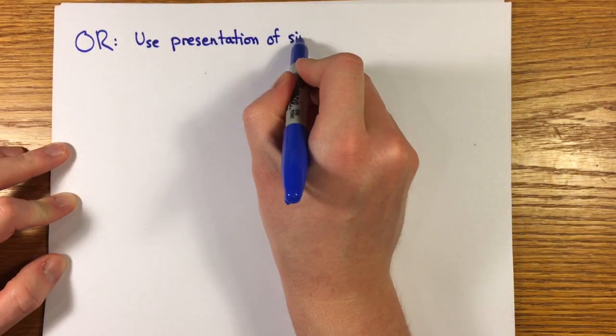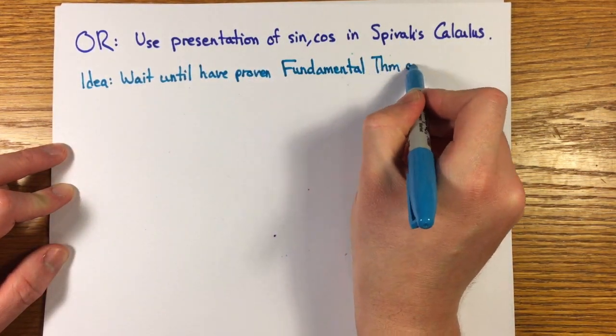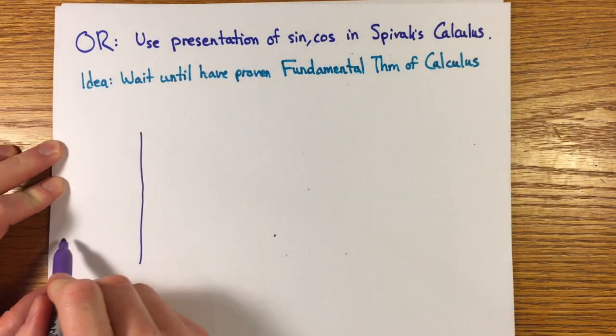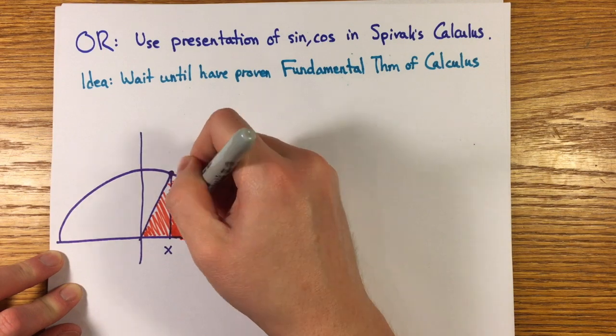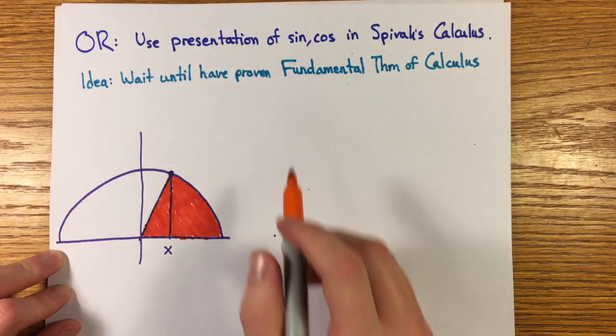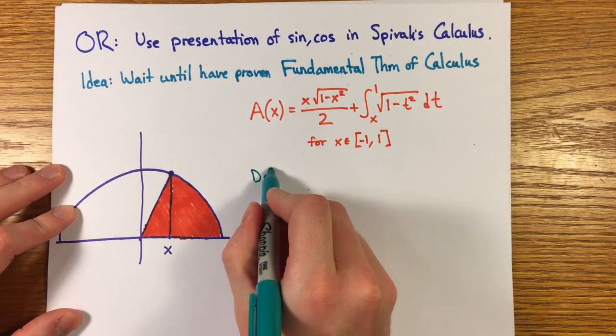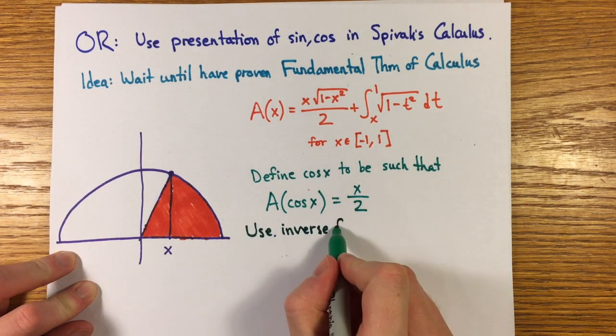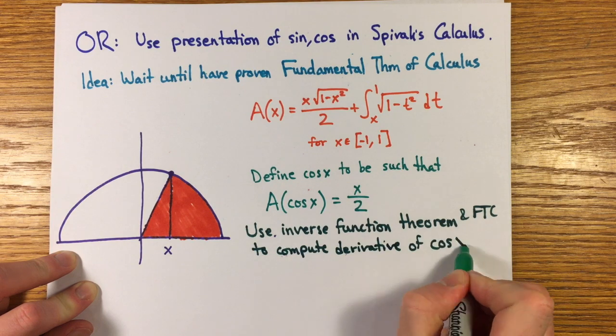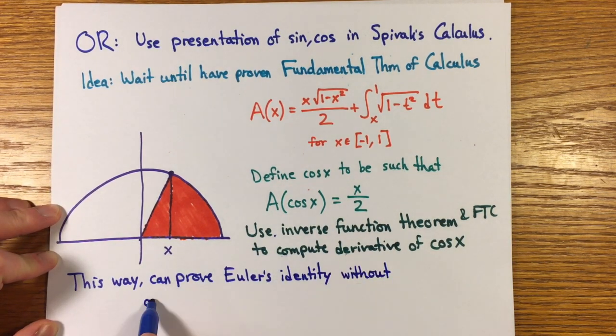As I described in the first episode of this series, Spivak's calculus text gives a different, unconventional presentation of the trig functions. Their definitions as inverse to areas of sectors is a standard variation on defining in terms of arc length, but because he waits until he's already proved the fundamental theorem of calculus and the inverse function theorem, he's able to take derivatives of sine and cosine without the angle sum identities. So technically, I suppose that using Spivak's presentation, one could derive Euler's formula before the angle sum identities.